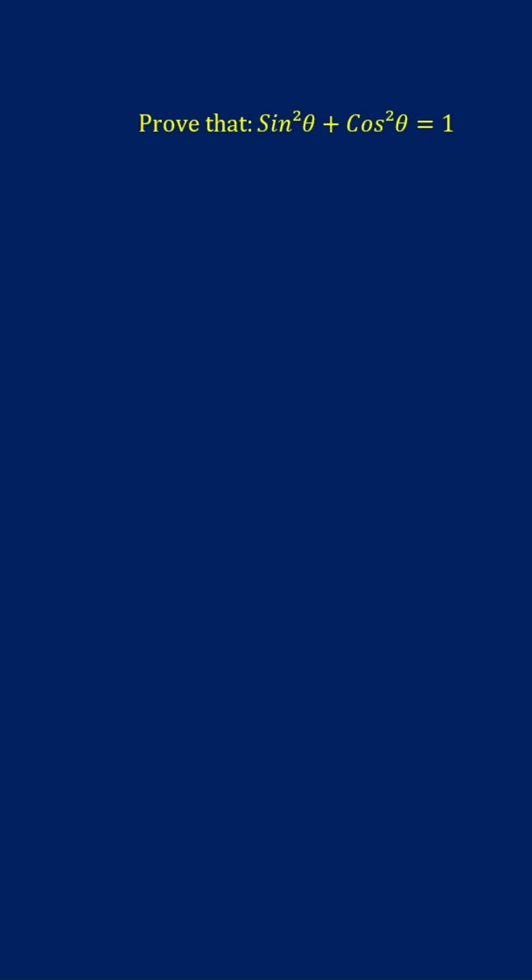Prove that sin²θ + cos²θ = 1. Consider a right angle triangle ABC, where theta is the angle of concern.